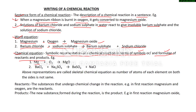So the first equation can be written as: Mg + O₂ → MgO. The second reaction can be written as: BaCl₂ + Na₂SO₄ → BaSO₄ + NaCl. These formulas — barium chloride, sodium sulfate, barium sulfate, and sodium chloride — were discussed in Class 9.